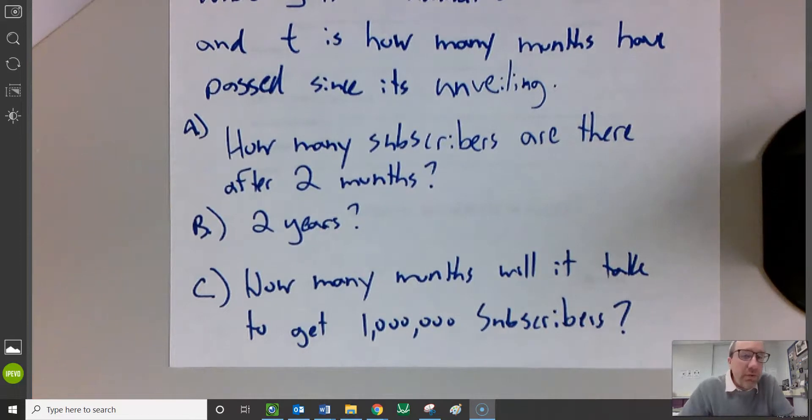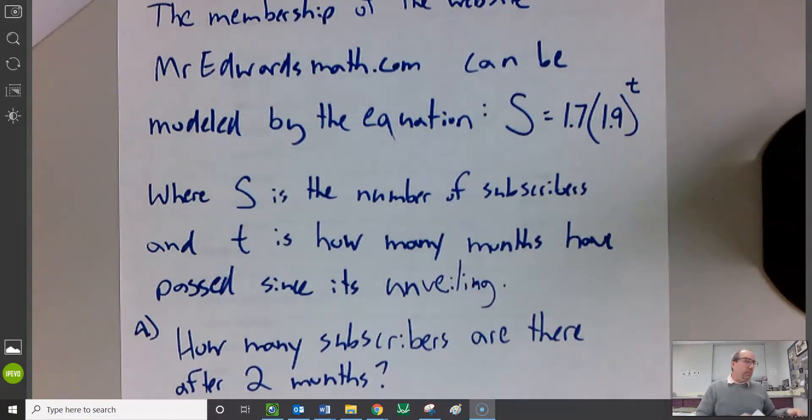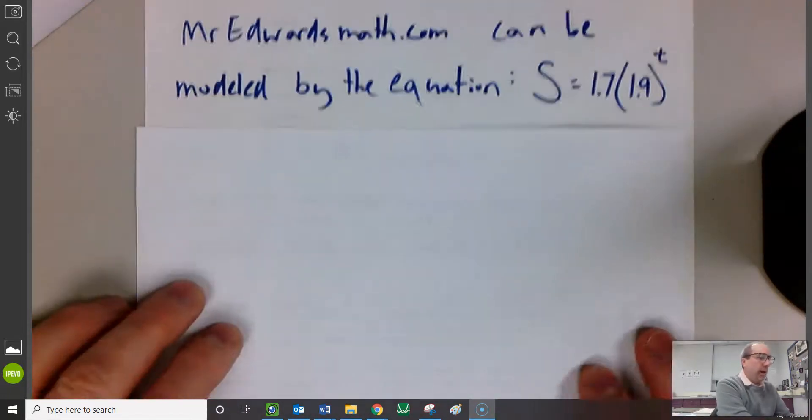And then let's use that equation and answer some questions. Here are the three questions. How many subscribers are there after two months? How many subscribers are there after two years? And then finally, how many months would it take for me to get to the one million subscriber mark? Here's our equation. We have the three things we're looking for. Let's go through and find them.